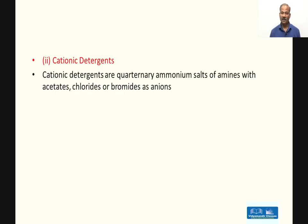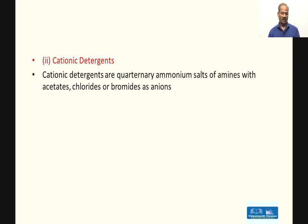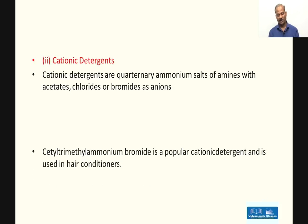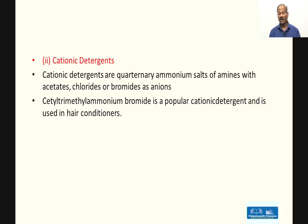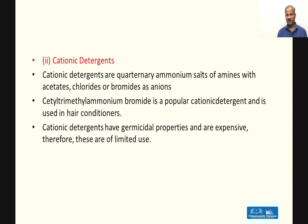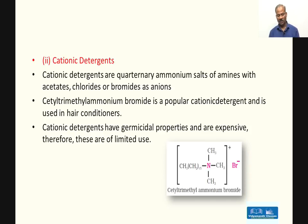Cationic detergents are quaternary ammonium salts of amines, with acetate, chloride, or bromide as the anion — the four hydrogen atoms on the ammonium ion are replaced by alkyl groups. Cetyltrimethylammonium bromide is a popular cationic detergent used in hair conditioners. Cationic detergents have germicidal properties but are expensive compared to anionic detergents and therefore of limited use.